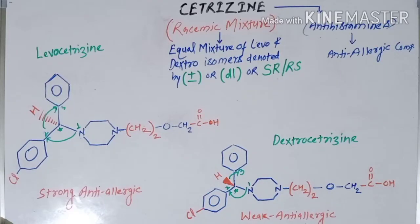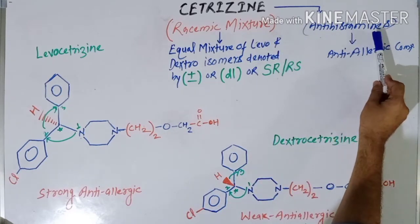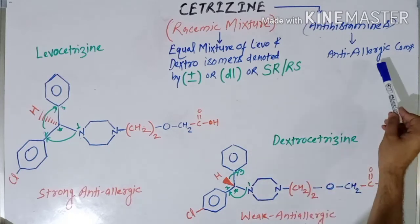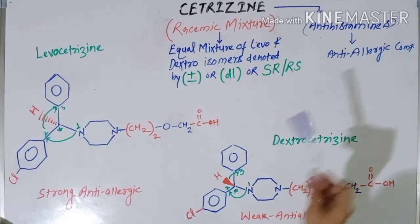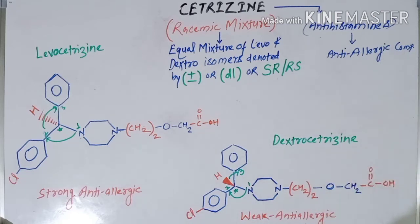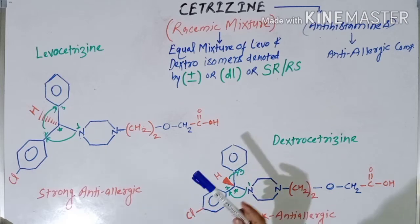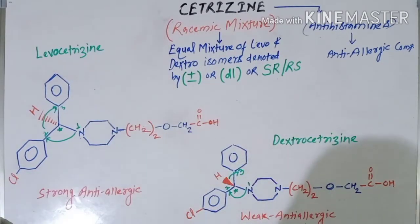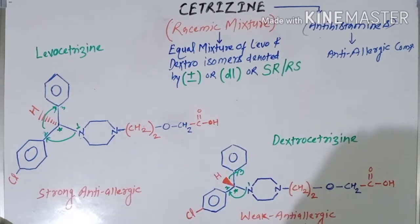Hello dear viewers, welcome back to MedChem Companion channel. Today we will discuss the stereochemistry of cetirizine. Cetirizine is a drug of the class antihistamines, also known as anti-allergic compounds, used in the treatment and management of allergic reactions. The classification of antihistamines is already covered in a previous lecture; today we will discuss the difference between cetirizine and its enantiomer levocetirizine.